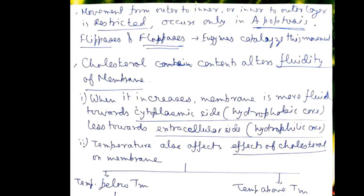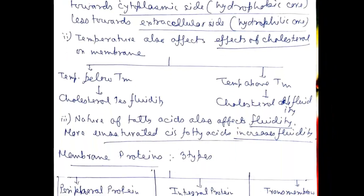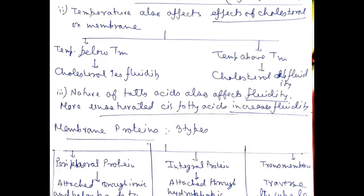Cholesterol content alters the fluidity of the membrane. When it increases, the membrane is more fluid towards the cytoplasmic side, that is towards the hydrophobic core, and less fluid towards the extracellular side, that is the hydrophilic side. Temperature also affects the effects of cholesterol on the membrane. When temperature is below Tm, cholesterol increases fluidity. But when temperature is above Tm, cholesterol decreases fluidity. The nature of fatty acids also affects fluidity. More unsaturated cis fatty acids increase fluidity.